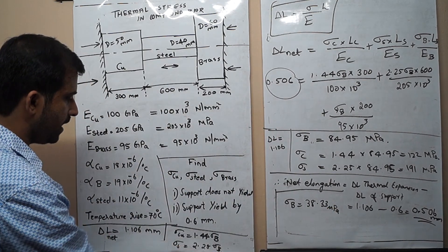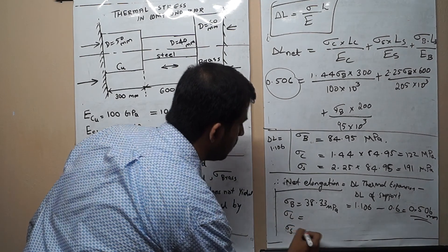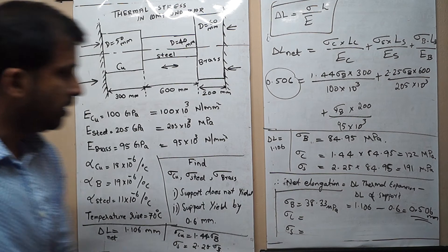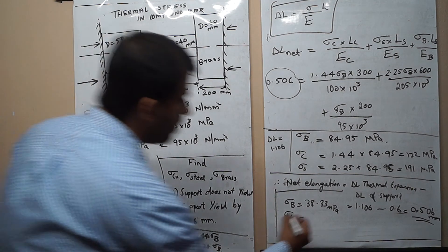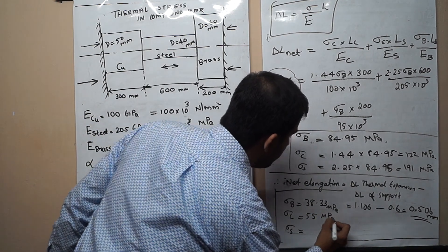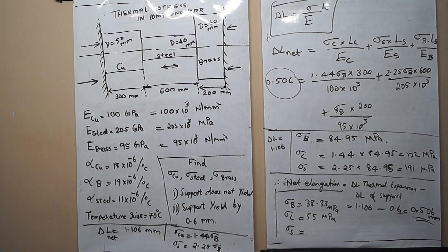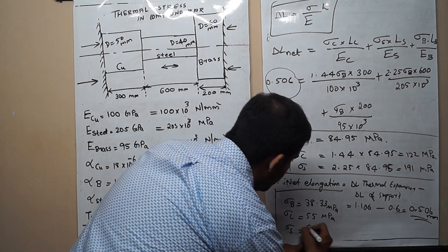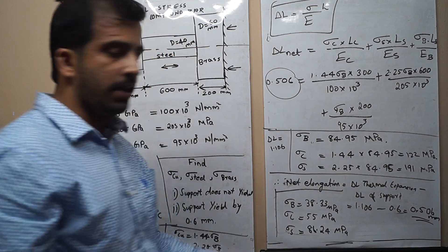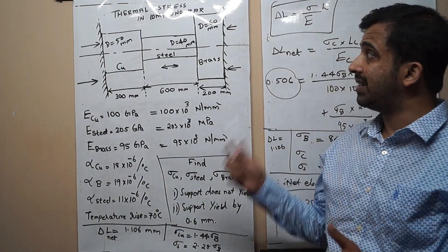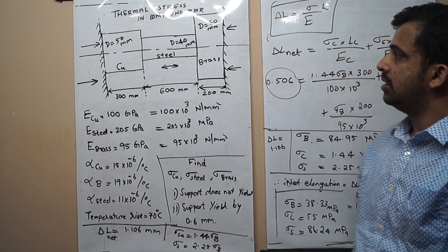Substituting σ_B = 38.33 MPa: σ_copper = 1.44 × 38.33 = 55 MPa, and σ_steel = 2.25 × 38.33 = 86.24 MPa. This is how we solve the problem of thermal stress in a compound bar or an indeterminate structure. Thank you.